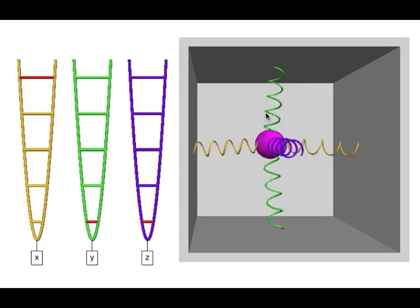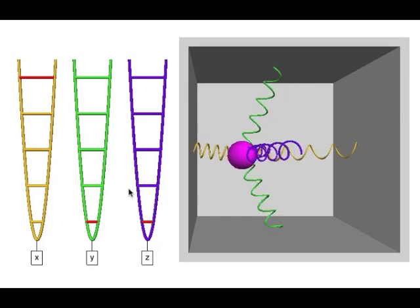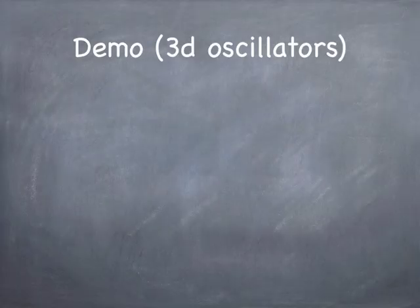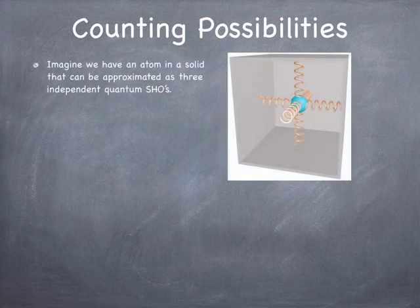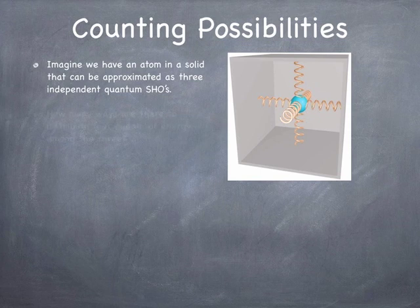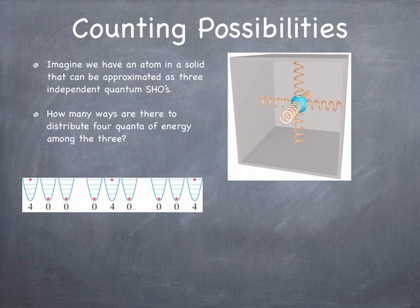You get a sense of physically what's going on inside the crystal for different amounts of energy in different directions. If we have an atom in a box representing one atom from our crystal, we want to figure out how many ways there are to distribute the energy — say four quanta of energy — among the three oscillators associated with the three directions of motion. You could put all four quanta into one direction: four in x and none in y and z, or four in y, or four in z — that's three ways.